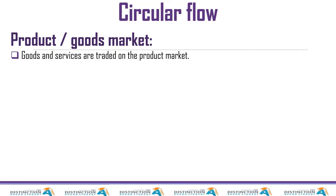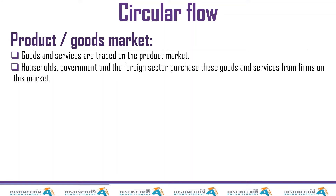What is a product market? Goods and services are traded on the product market. It's a market where goods and services are traded. Households, government, and the foreign sector purchase these goods and services from firms on this market. When we did the circular flow model, after getting our income we pay tax, then we save if we are surplus units, or borrow if we are deficit units, but at the end of the day we are going to spend money on the product market.